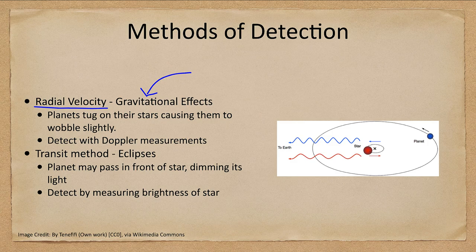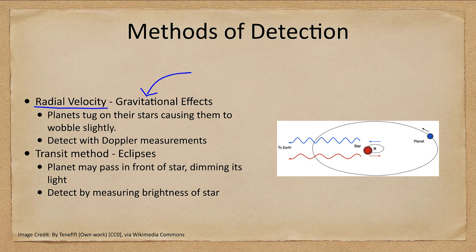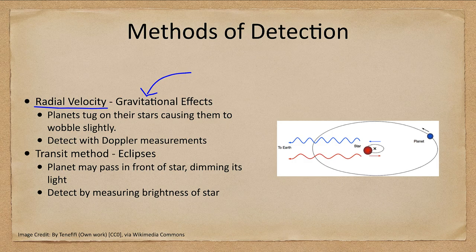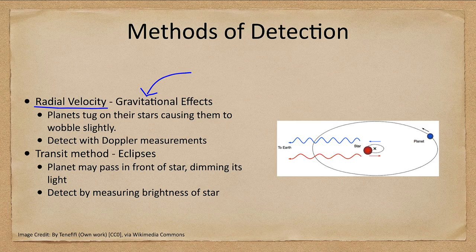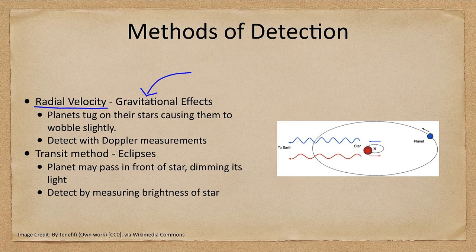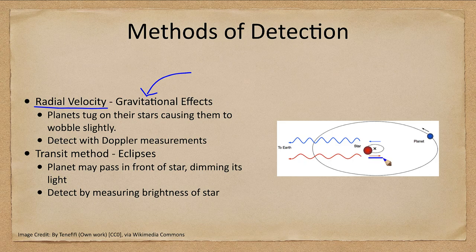In reality the planet and star orbit around each other. They orbit around a common center of mass. Because the star is many times larger and more massive than the planet, the center of mass is very close to the star or even inside the star. But the star is actually moving, so sometimes it is moving away from us and sometimes it is moving toward us.